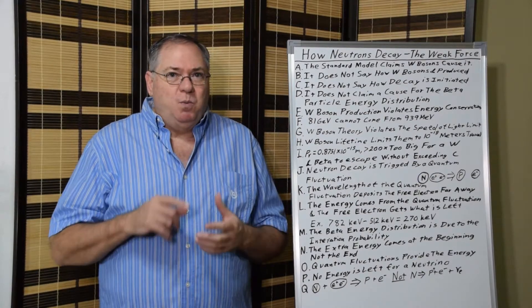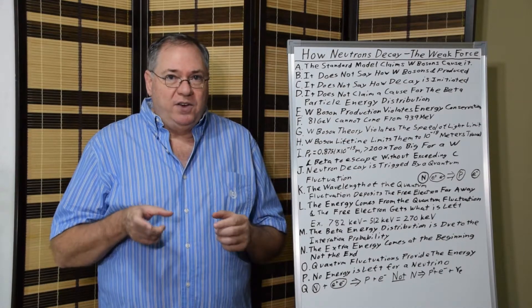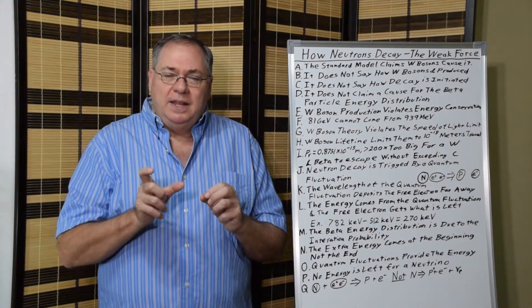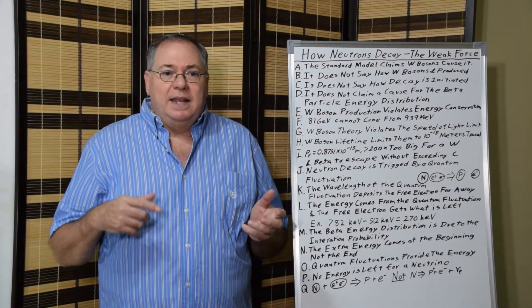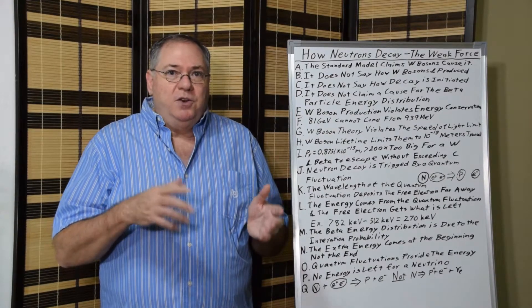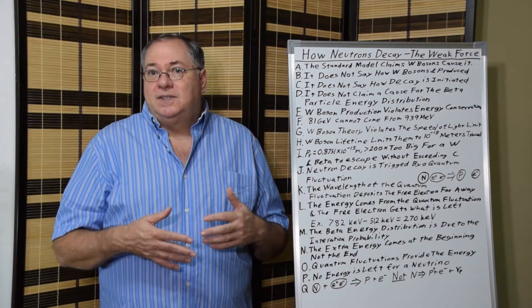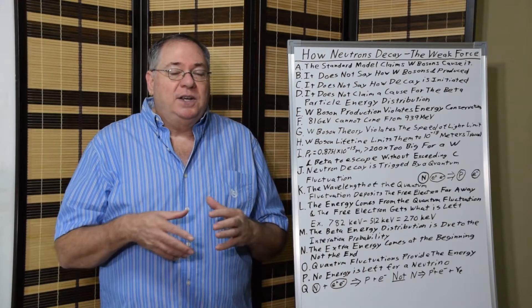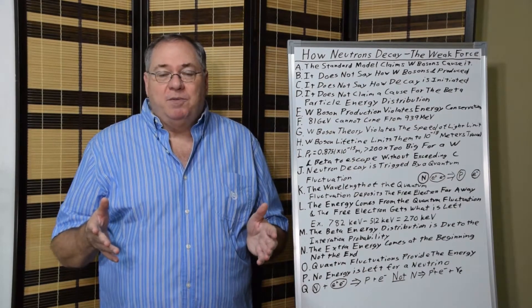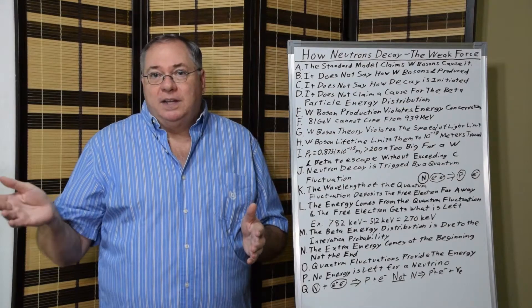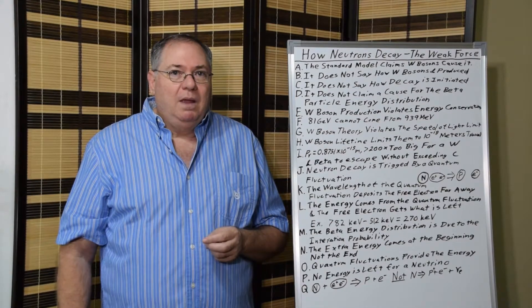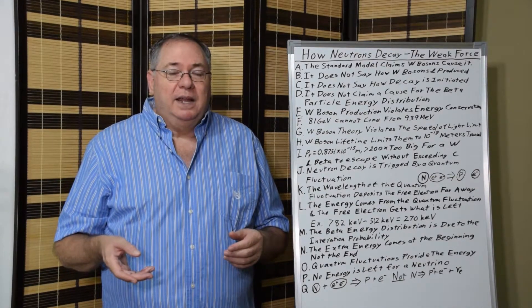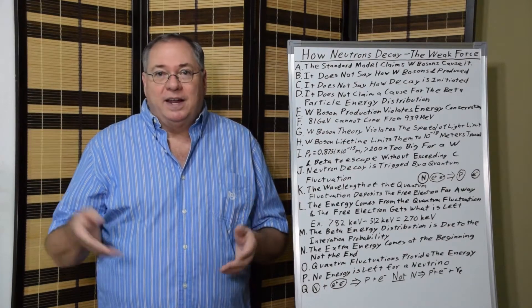So, this model tells us what triggers the interaction. And what triggers the interaction is we have a quantum fluctuation interacting with a neutron that has the right energy. And the energy is important because the neutron has an excess 782 keV of energy. And that tells us where the energy distribution comes from of the electron that's been emitted. And the W-Boson model doesn't explain where the energy distribution comes from. It just says it comes from and then a neutron gets the leftover.